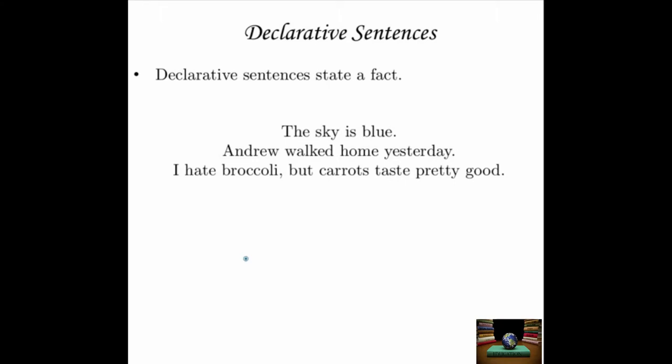Declarative sentences are the kind of sentences you will use most in English. They are sentences that state a fact. For example: 'The sky is blue.' 'Andrew walked home yesterday.' 'I hate broccoli, but carrots taste pretty good.' You are stating both of those things as facts. Bear in mind, 'carrots taste pretty good' is an opinion, but the person stating it is stating it as if it were a fact, so it is a declarative sentence.